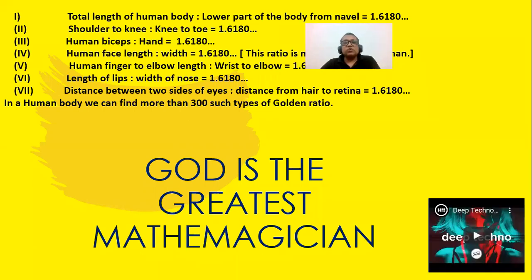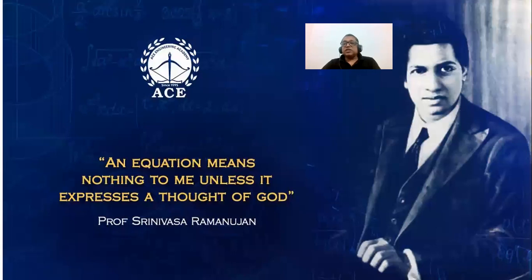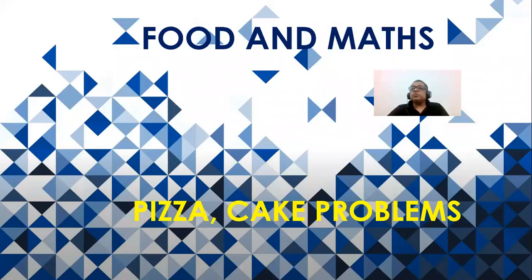There are more than hundreds of golden ratio instances in your body. The distance of the lips to the width of the nose is 1.6; human face length to width is 1.6; human biceps to hand is 1.6; shoulder to knee and knee to toe is 1.6. As Srinivasa Ramanujan said, 'An equation means nothing to me unless it expresses a thought of God.' Everything in nature is actually in the golden ratio.